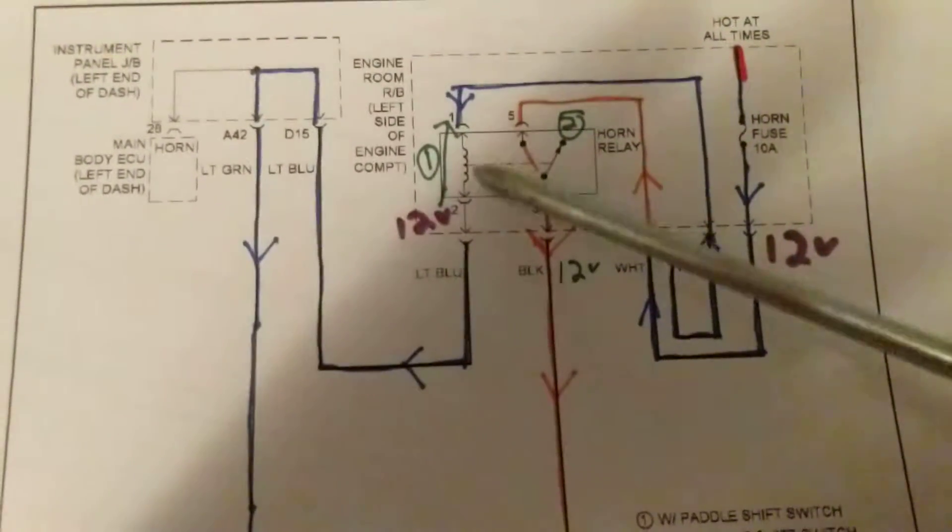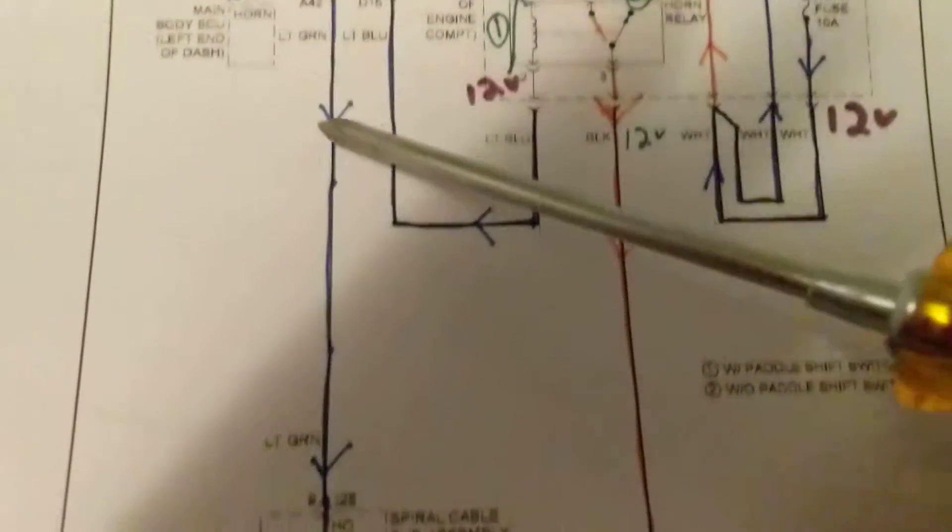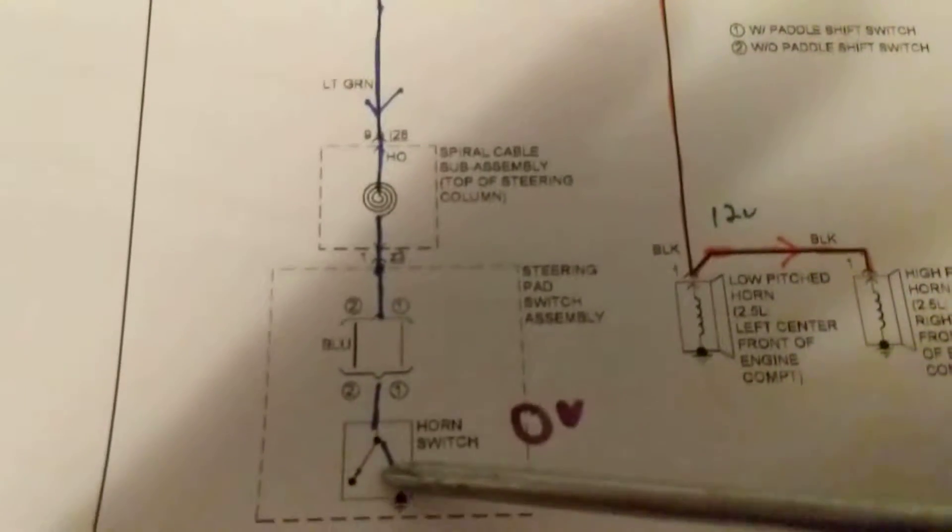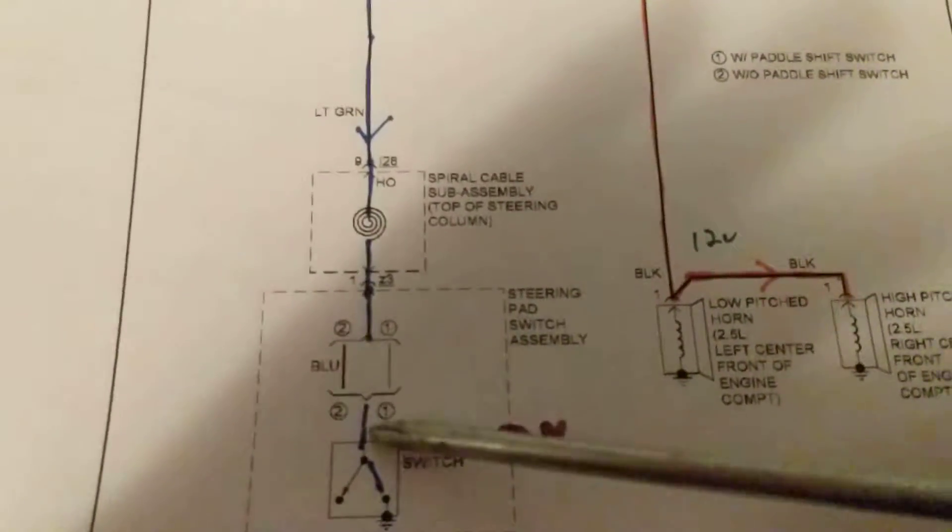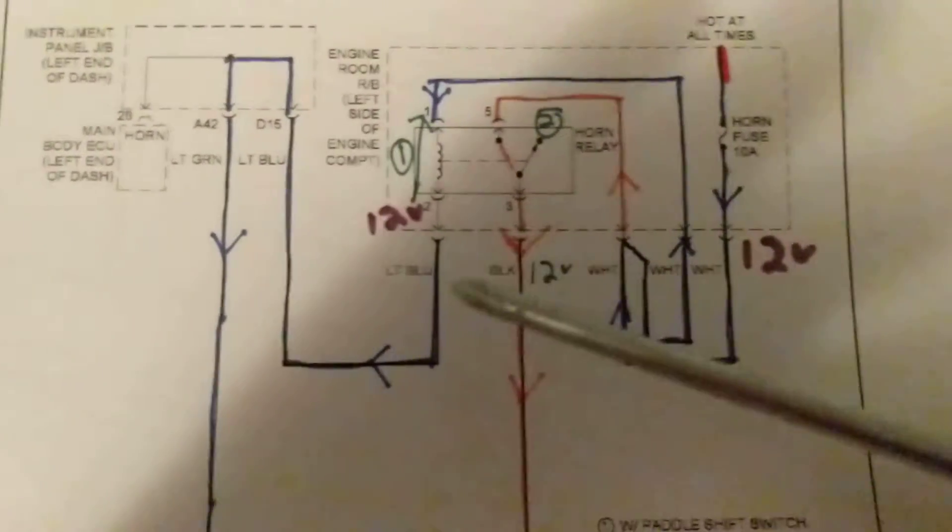For this relay, this coil to be energized, otherwise it's an open circuit. So therefore this has to be closed to ground. When we hit it, we're closing the circuit to ground, we're activating this part of the relay.